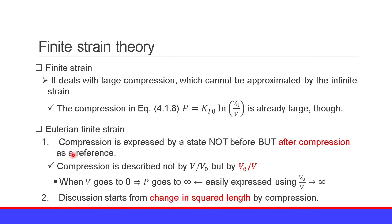One feature is that compression is expressed using a state after compression as a reference, not before. In the usual case, compression is described using the parameter V over V0. But in the Eulerian finite strain theory, compression is described by V0 over V.